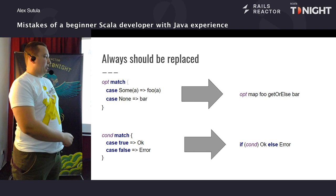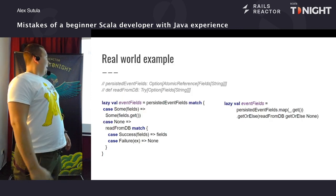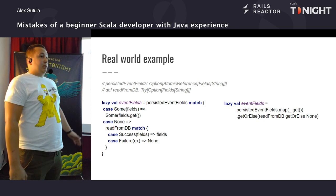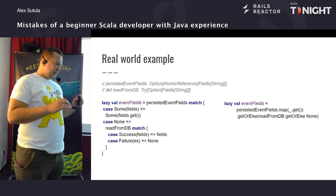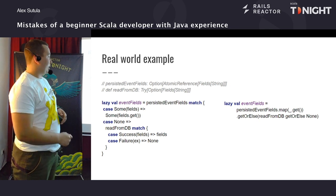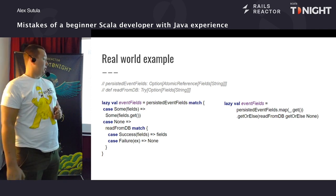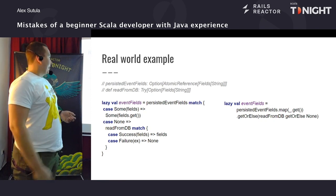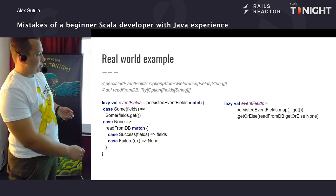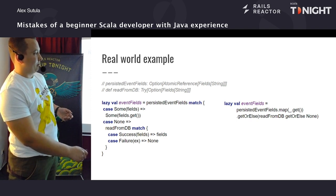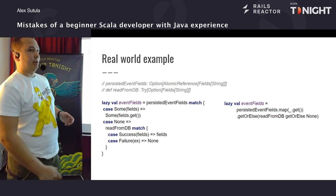Будь-яку конструкцію типу pattern matching на Option ми можемо переписати таким виглядом — це стандартний паттерн, він завжди мав би використовуватися. Так само як і перевірка на булеву змінну — якщо у вас є булеан, краще напишіть старий добрий if, це збереже вам нерви. Реальний приклад із життя: в нас є якісь iventi, і їх може не бути. Якщо їх немає і якщо вони є — то ми їх повертаємо, просто викликаємо на них якийсь метод. Якщо ні, то ми йдемо в базу і витягуємо їх. І весь цей ліс умовних конструкцій ми можемо переписати ланцюжком.